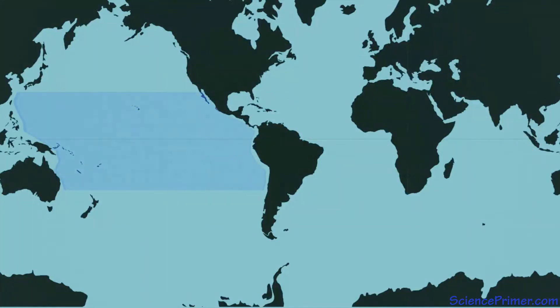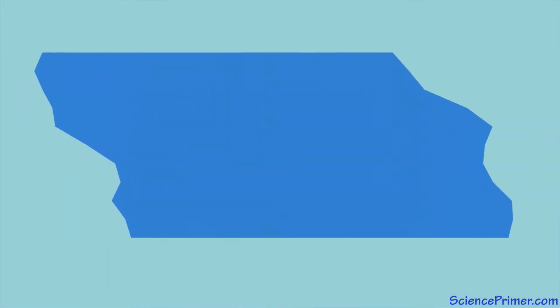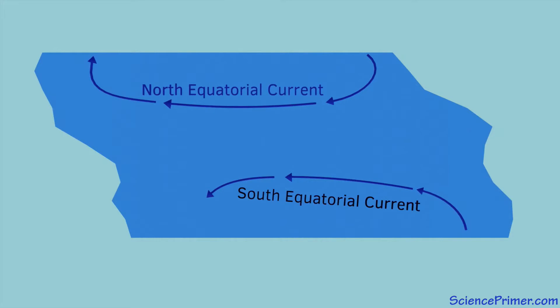Some early work done to understand the cause of equatorial counter currents was performed in the Pacific. North and south of the equator, prevailing easterly trade winds move water westward across the ocean basin forming the north and south equatorial currents. Because the Coriolis effect is relatively weak at low latitudes, these currents don't experience much deflection, allowing them to travel with the wind to the western side of the basin.